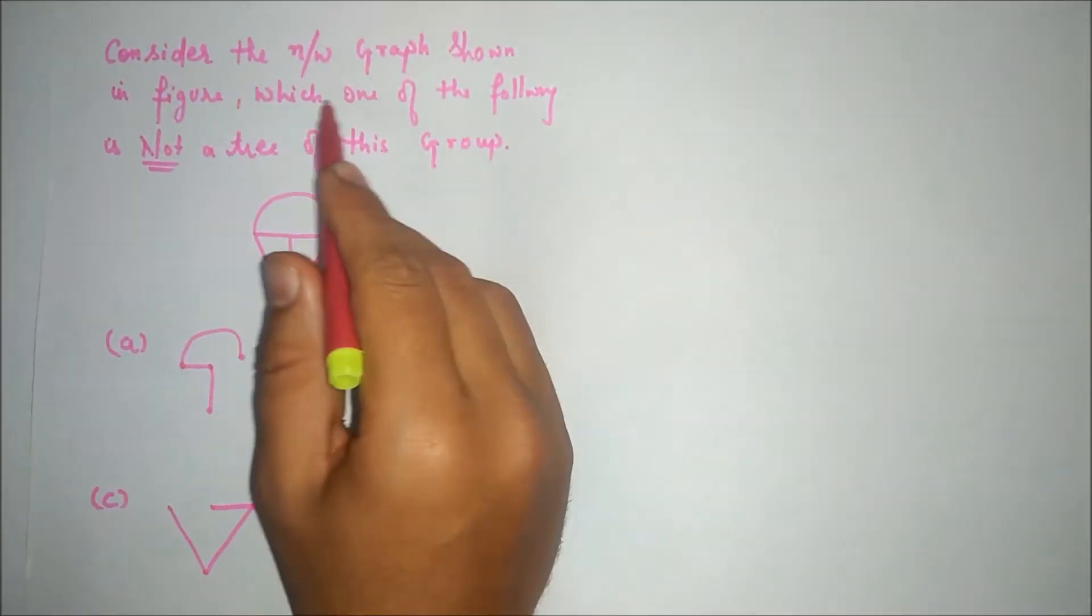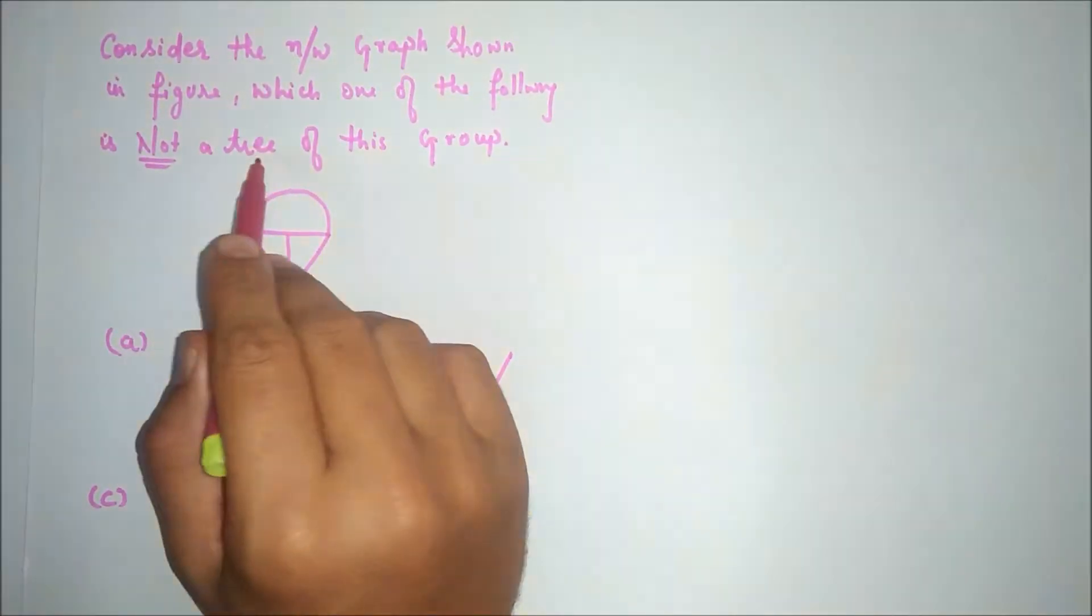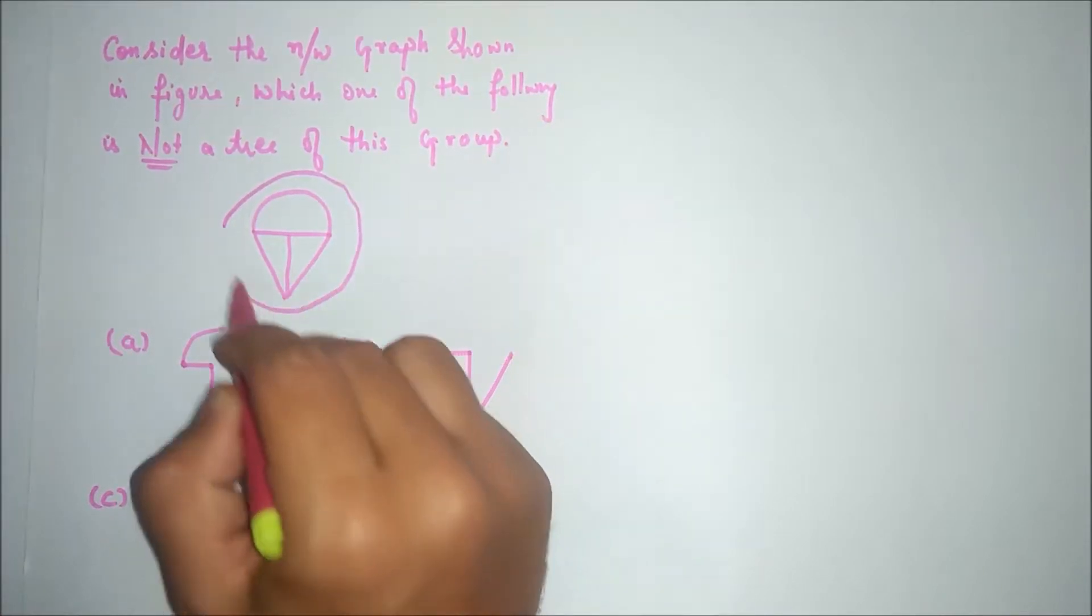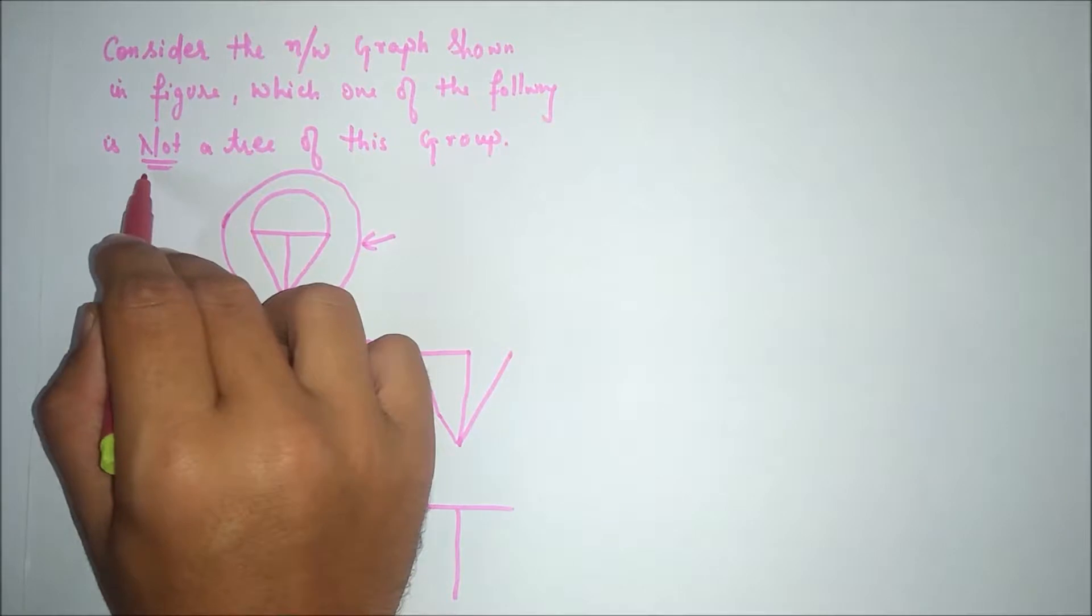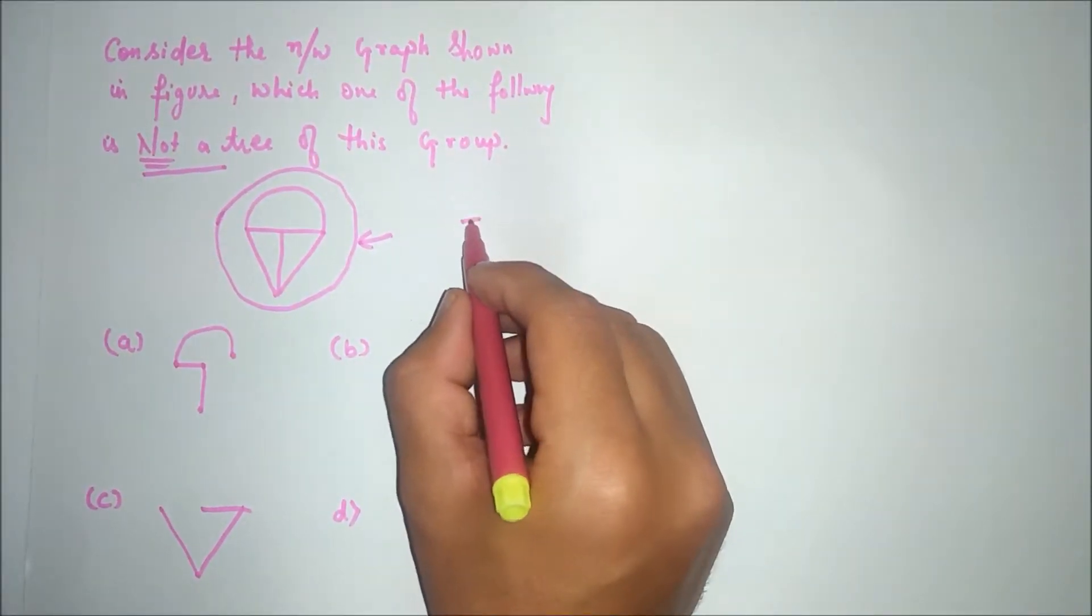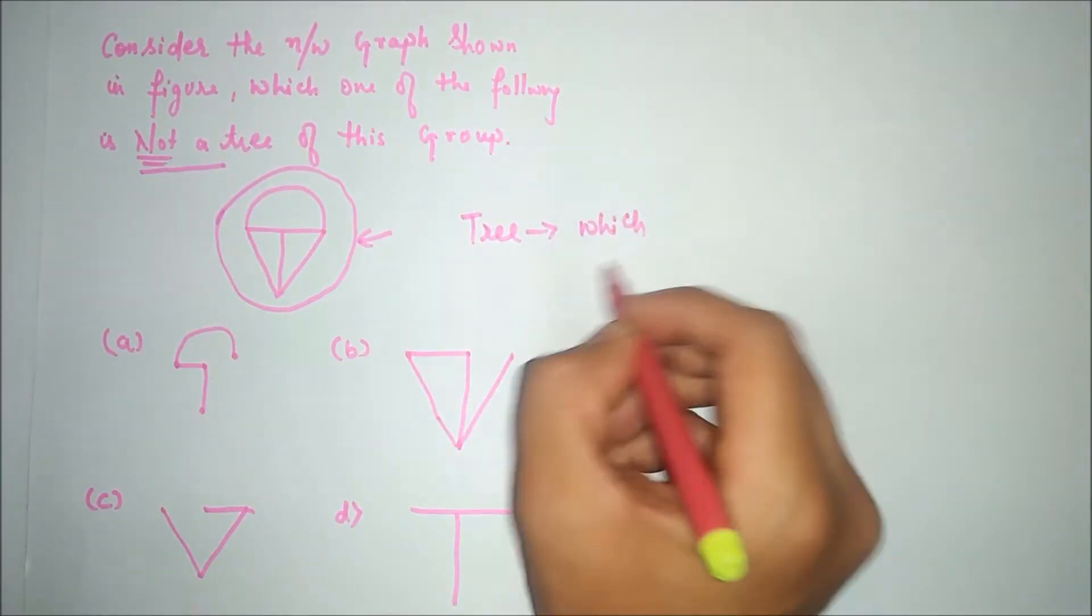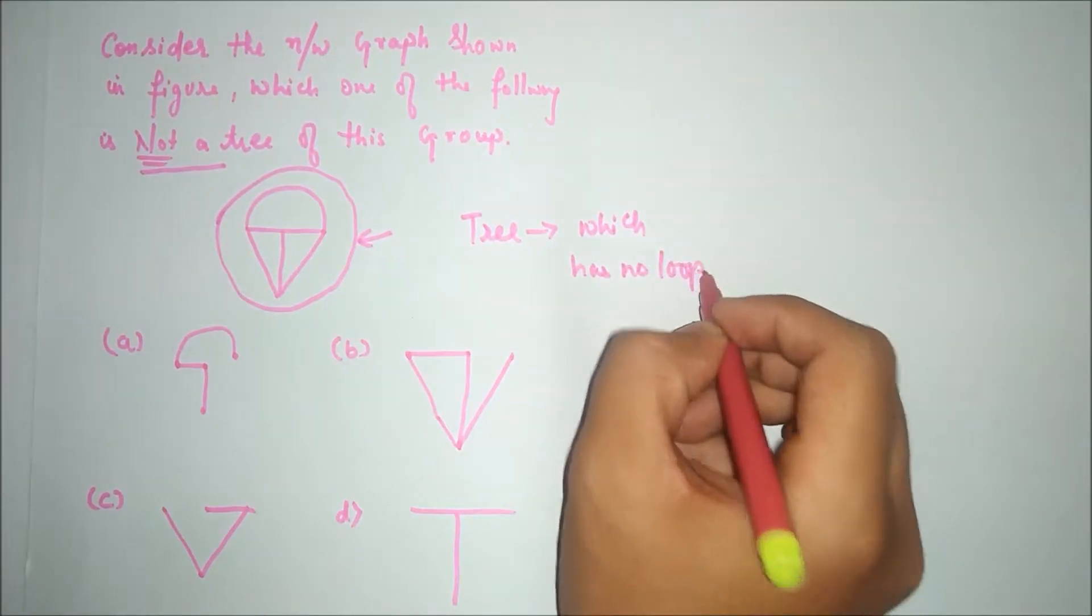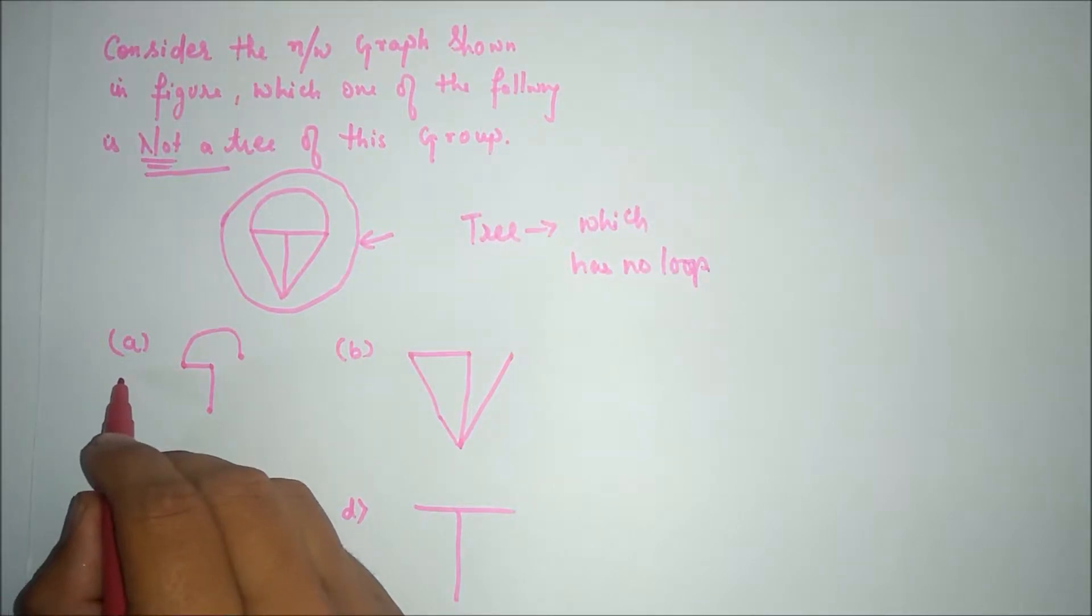The question is: consider the network graph shown in the figure, which of the following is not a tree of this group? This is a graph and here it is written which is not a tree. So first we will see what is a tree. A tree means which has no loop.